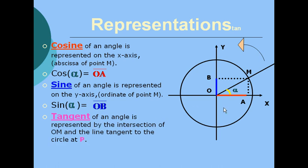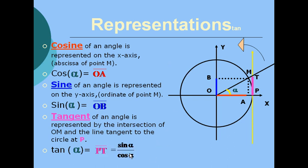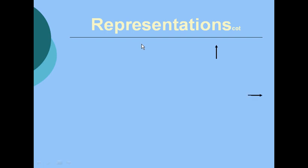Since MA is equal to OB, sine alpha is equal to segment OB. To represent tangent alpha, it is equal to segment TP. We know that the formula for tangent of an angle is equal to sine over cosine.